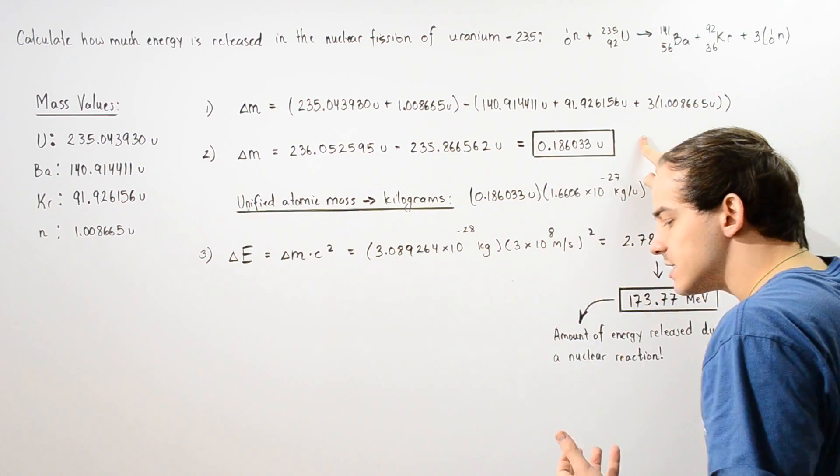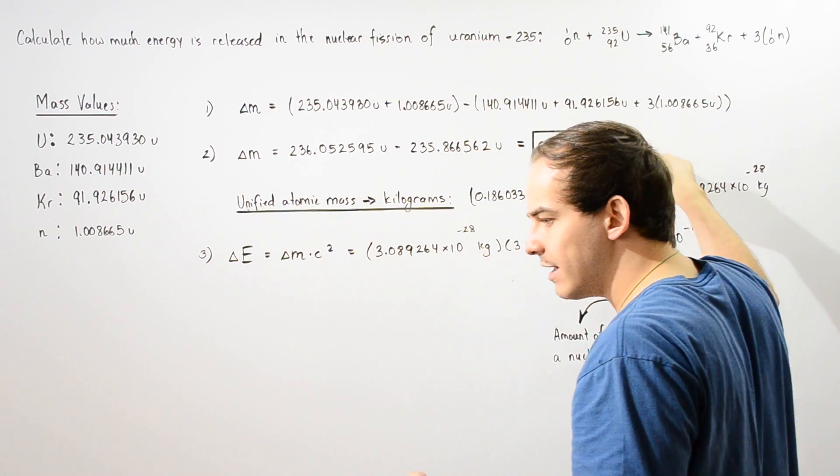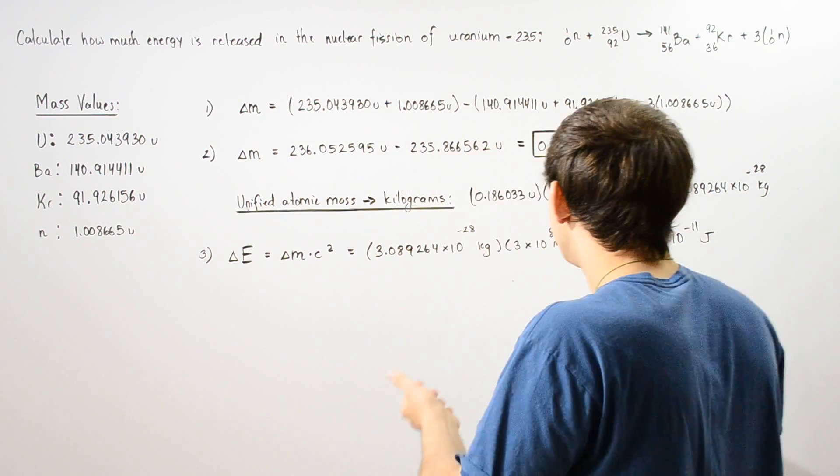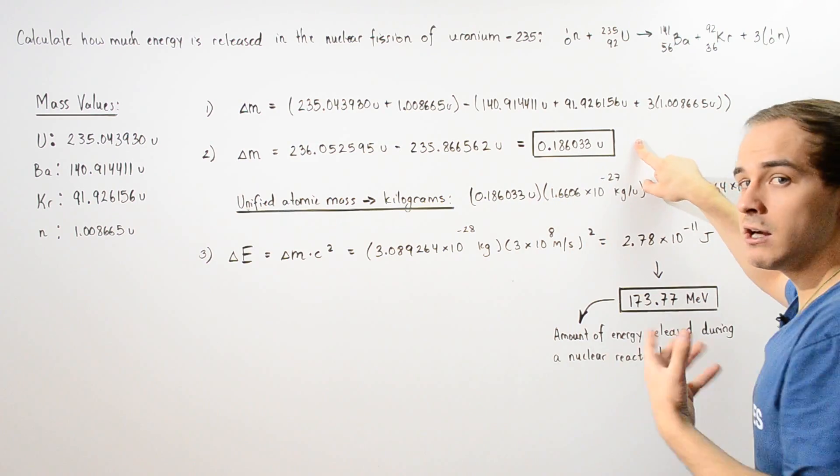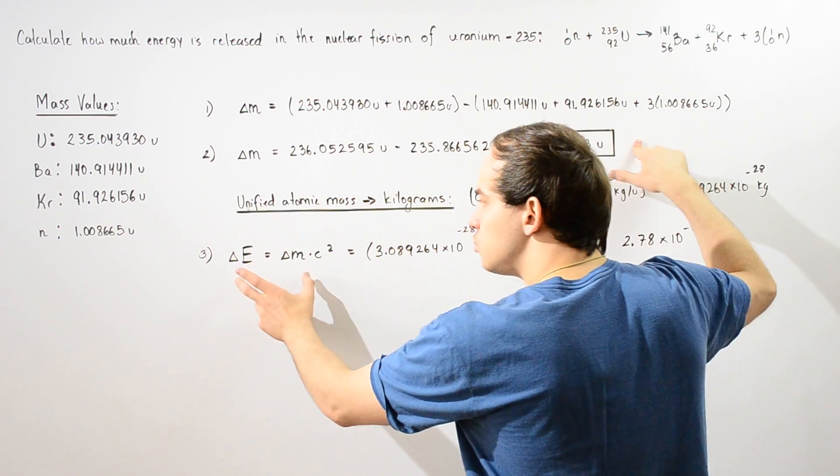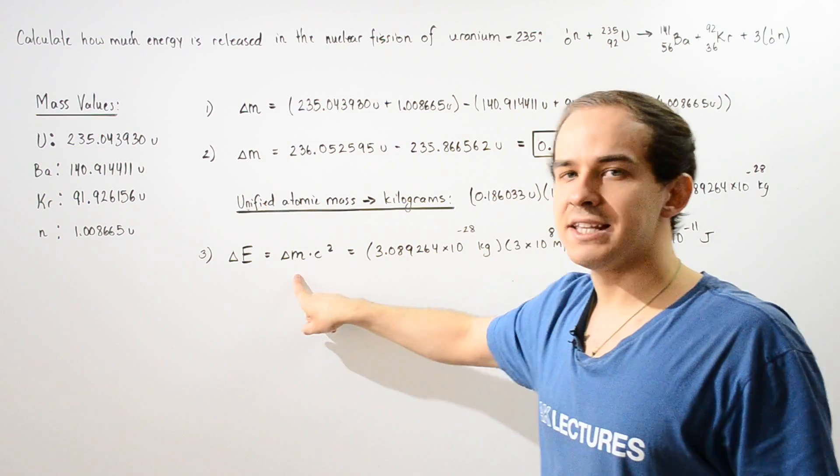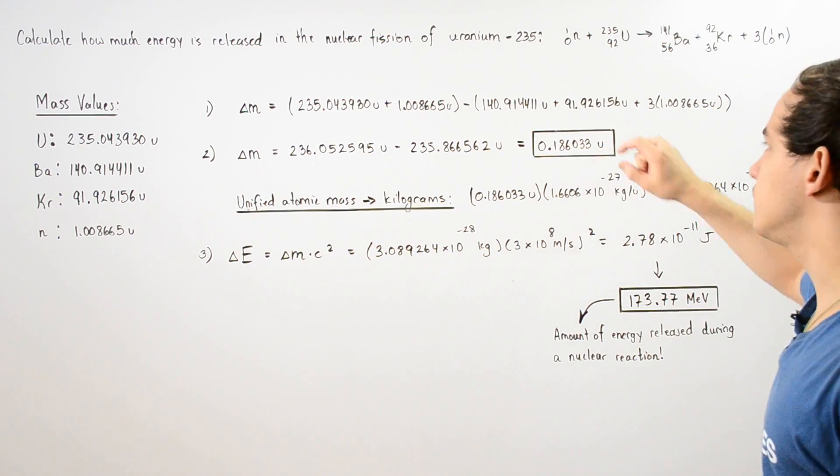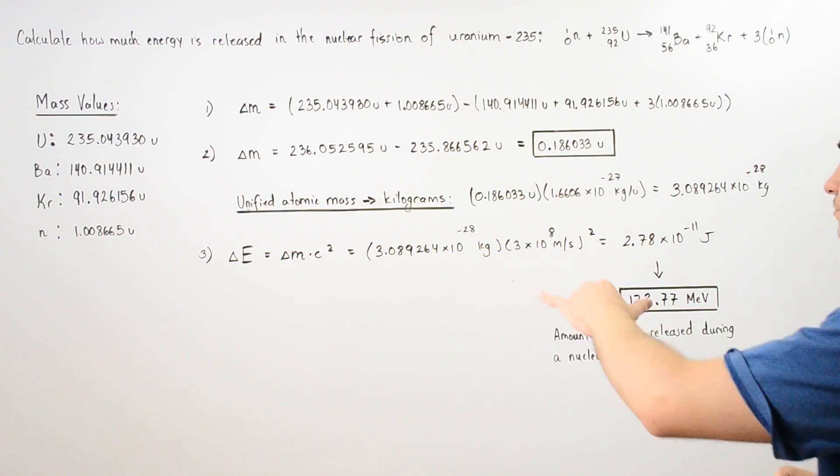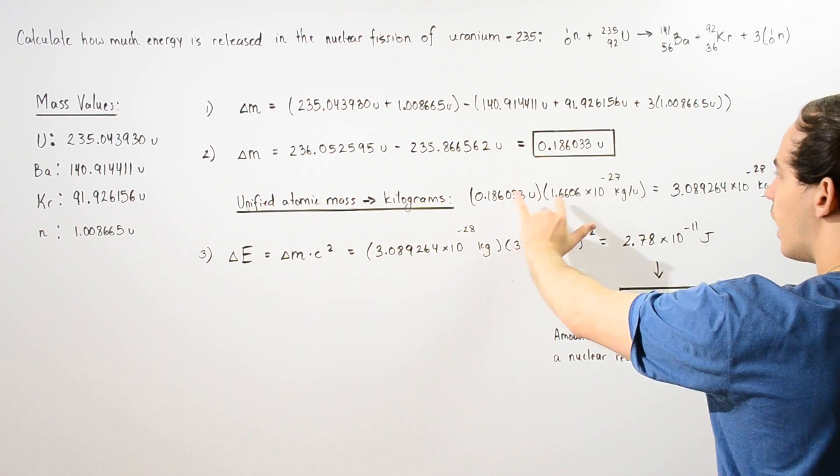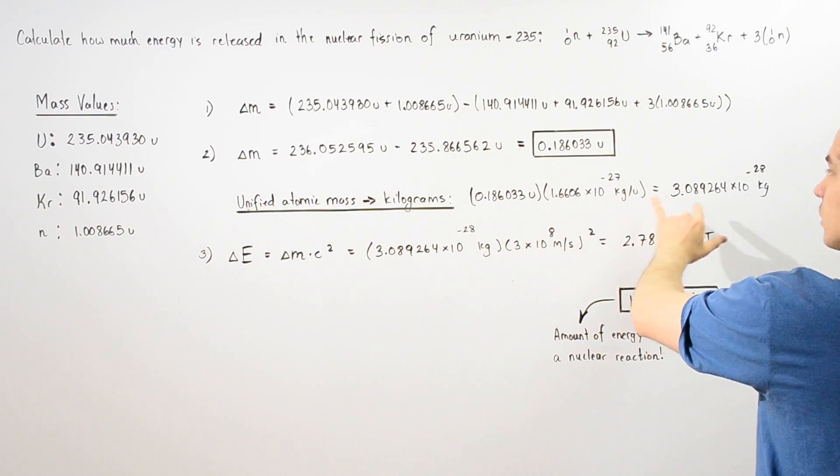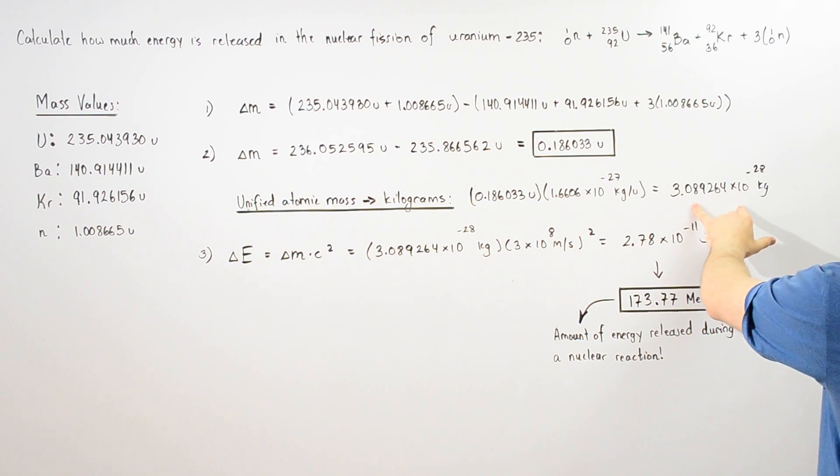Now, because we can use this to calculate the energy, we can take this and convert this into kilograms because to use the rest mass energy equation, we have to know the mass in kilograms and not in unified atomic mass units. So we take this quantity and multiply it by the conversion factor, and we get the mass in kilograms.